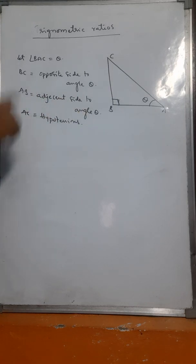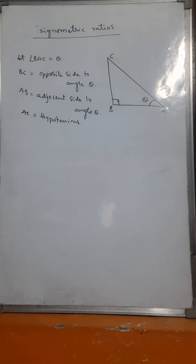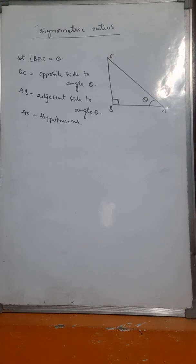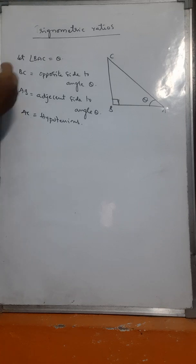Now, a trigonometric ratio is the ratio between the lengths of a pair of two sides of a right angle triangle. It may be BC by AB, or AB by AC, or AC by BC — any ratio of two sides.